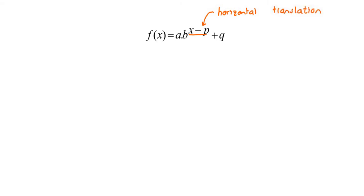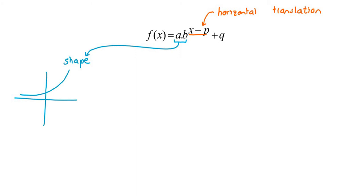Let's discuss the shape of an exponential. The shape comes from 'a' and 'b'. The first main shape is an increasing exponential — one that keeps going up — and that occurs when your base is greater than 1. For example, 2 to the power of x: as you compute 2 squared, 2 cubed, 2 to the 4th, 2 to the 5th, the numbers just get bigger and bigger, so that is an increasing function.